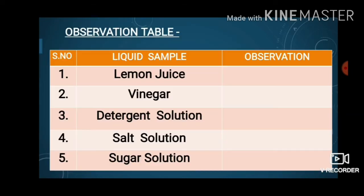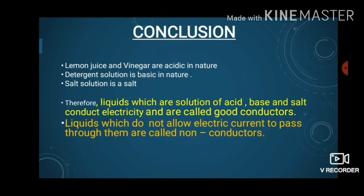Let us go back to the observation table and try to categorize the liquid samples. Lemon juice and vinegar can be categorized as acidic in nature — lemon juice contains citric acid and vinegar contains acetic acid. Detergent solution is basic in nature and salt solution is neutral. After categorizing, we observe that liquids which are solutions of acid, base, and salt conduct electricity — those are good conductors. Liquids which do not allow electric current to pass through them are called non-conductors.